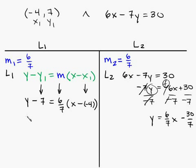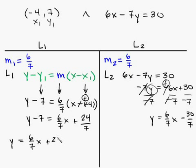Now simplify. y minus 7 is equal to, distribute the 6 sevenths into here. Now, these over here will become positive. Negative times a negative is positive. So you'll get 6 sevenths x plus 6 times 4 is 24 over 7. So now what we're going to do is add 7 to both sides. y is equal to 6 sevenths x plus 24 over 7. Since we're adding 7 on one side, we're going to add 7 on the other.